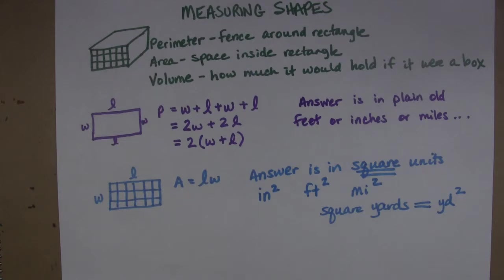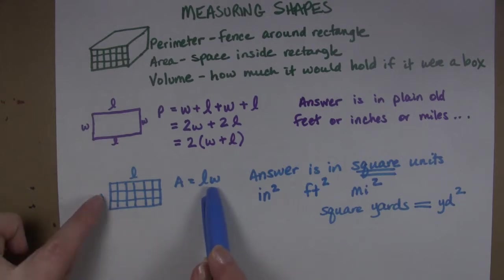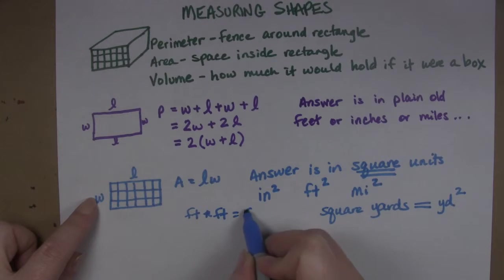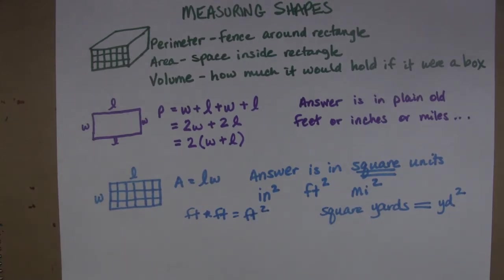So the reason that we do this is because since we are multiplying these two things together we are multiplying feet times feet. You know the width times the length which is another set of feet which gives us feet squared. So that's why we have to say it in square feet.